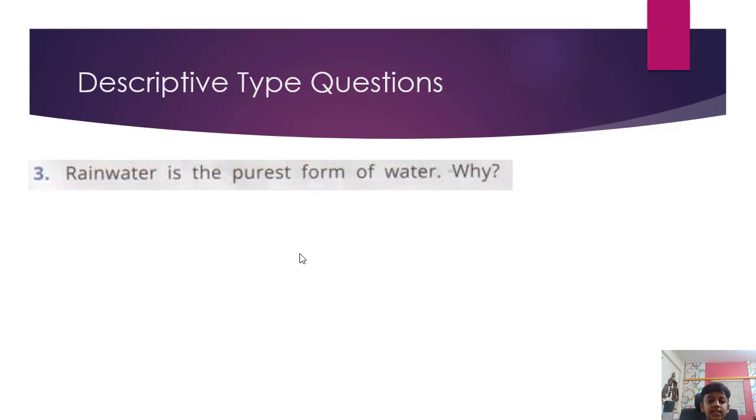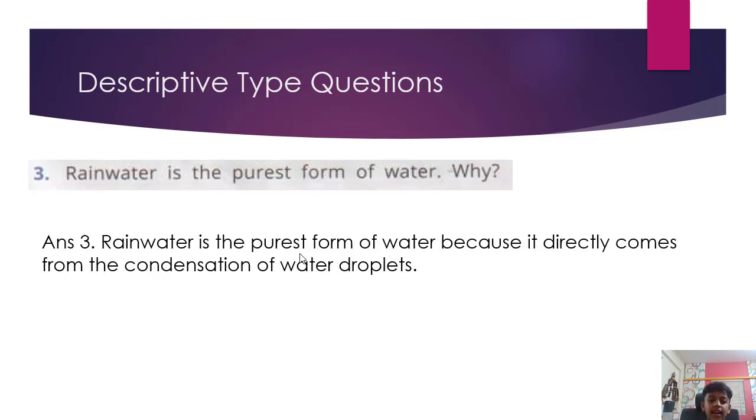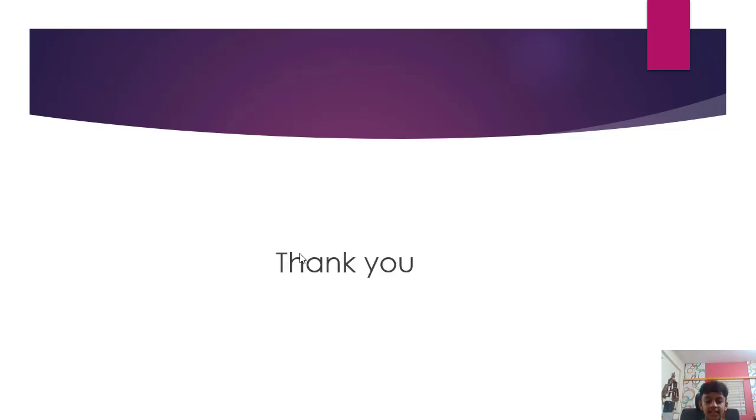Rainwater is the purest form of water. Why? Answer. Rainwater is the purest form of water because it directly comes from the condensation of water droplets. Thank you.